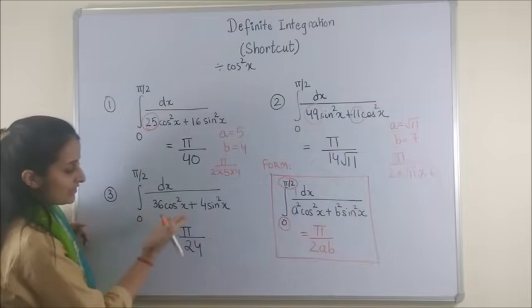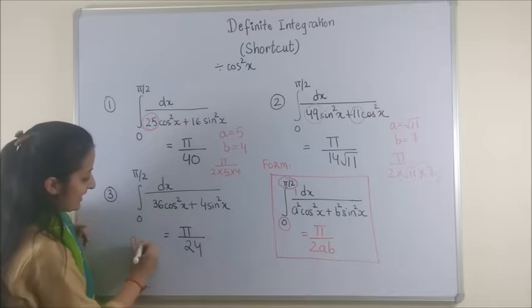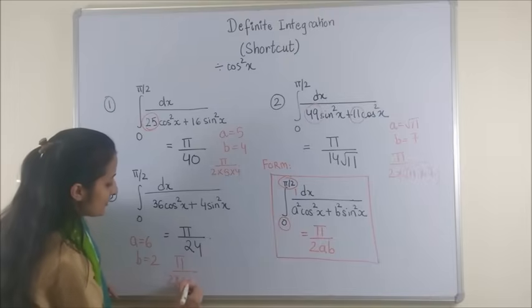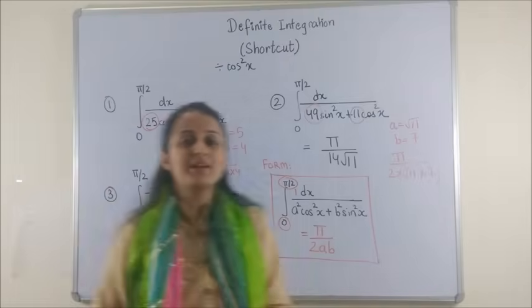You would have got the trick by now. So here your a is 6 and b is 2. Thus your pi upon 2 into 6 into 2 is simply pi by 24.